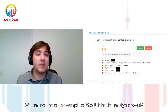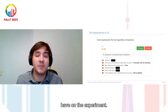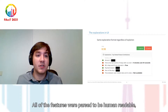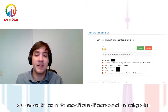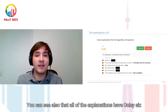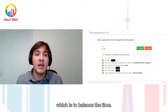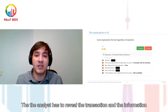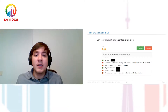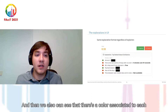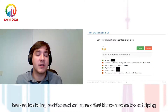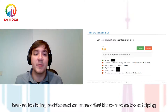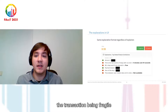We can see here an example of the UI the analysts would have in the experiment. All features were parsed to be human readable, and the feature values as well — you can see an example with a date difference and a missing value. You can also see that all explanations have only six components, to balance the time the analyst has to review the transaction and the information they receive. Each component has a color: green means it was contributing toward the transaction being non-fraudulent, and red means it was contributing toward it being fraudulent.